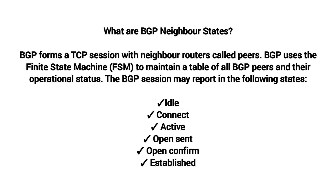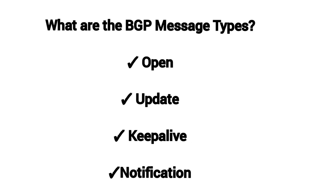What are BGP neighbor states? BGP forms a TCP session with neighbor routers called peers. BGP uses the finite state machine (FSM) to maintain a table of all BGP peers and their operational status. The BGP session may report the following states: Idle, Connect, Active, Open Sent, Open Confirm, and Established. The BGP message types are: Open, Update, Keepalive, and Notification.